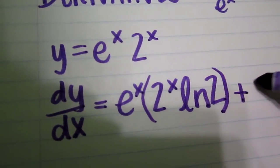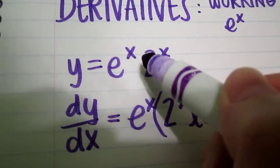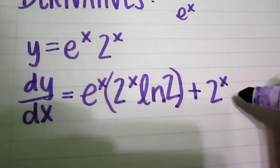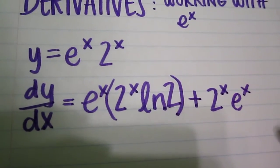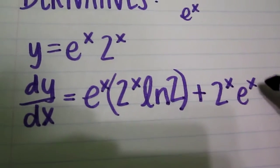Plus the second times the derivative of the first and the derivative of e to the x is very simple. It is just e to the x times the derivative of the base, not the base, the exponent if it's not just x.